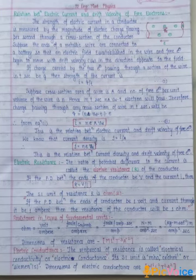We have already know it. Suppose the ends of a metallic wire are connected to a battery so that an electric field is established in the wire and free electrons begin to move with drift velocity Vd in the direction opposite to electric field E.